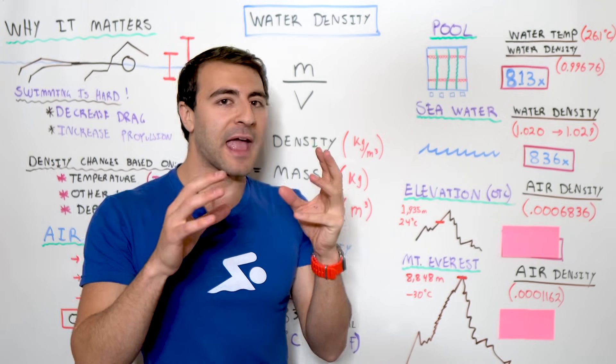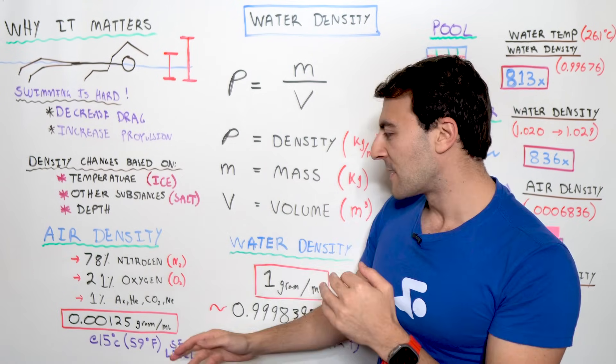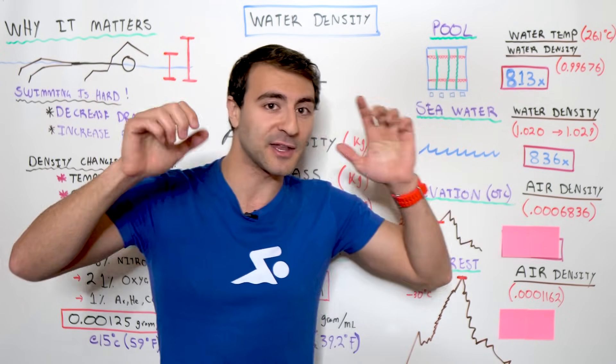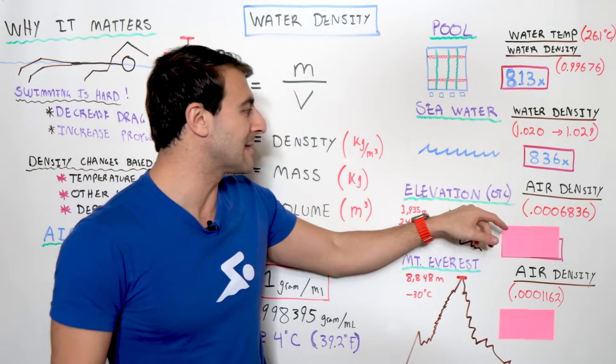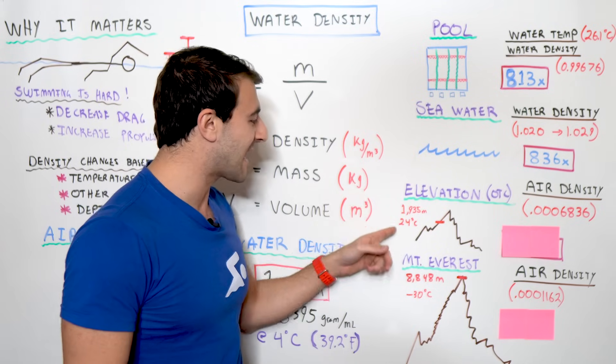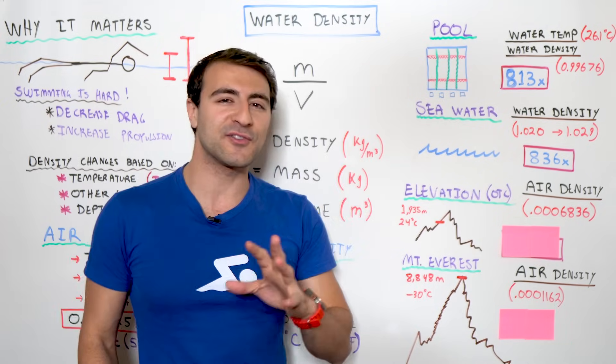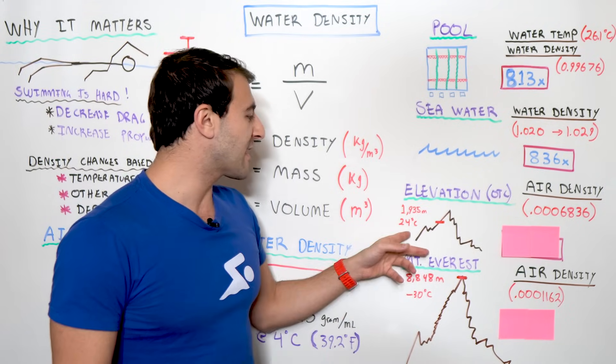Now, remember air and the variables here are depth. So, in air, that's pressure, air pressure. So, if you increase altitude and you were to go to like a training camp, like the Olympic Training Center in Colorado Springs, that sits at 1,935 meters. That's about 6,200 feet. Over there, let's assume an air temperature of 24 degrees Celsius. That's about 75 degrees Fahrenheit.